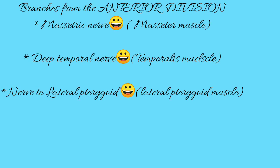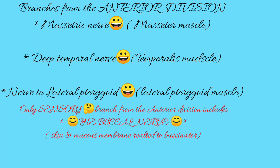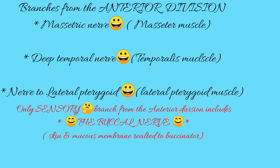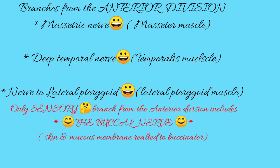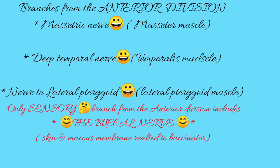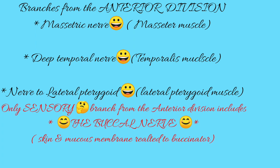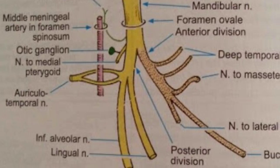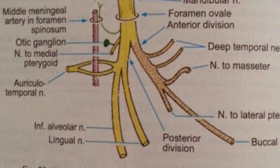Three motor branches from the anterior division include the masseteric nerve, deep temporal nerve, and nerve to lateral pterygoid. The only sensory branch from the anterior division is the buccal nerve. You can see the branches of the anterior division.